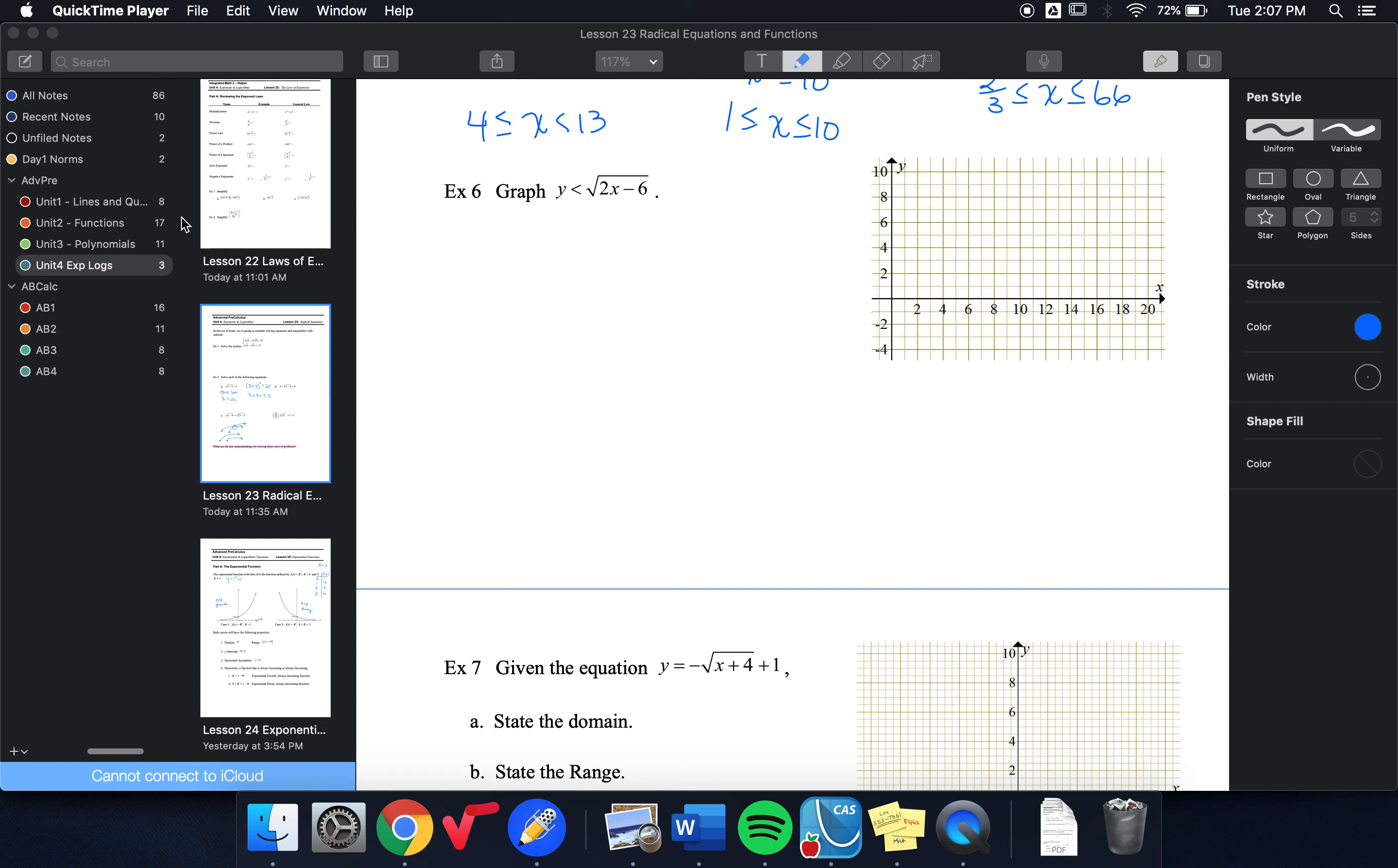All right, in this video I'm going to show graphing a radical inequality. So I'm going to start by thinking about what this equation would look like if it was y equals square root of 2x minus 6. And I'm going to factor out that 2, because I want my b value alone.